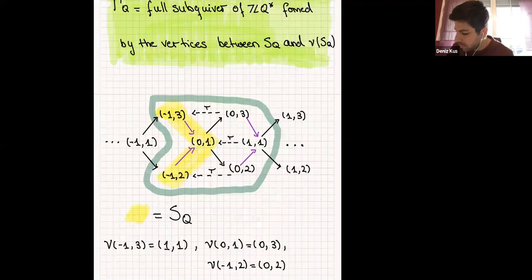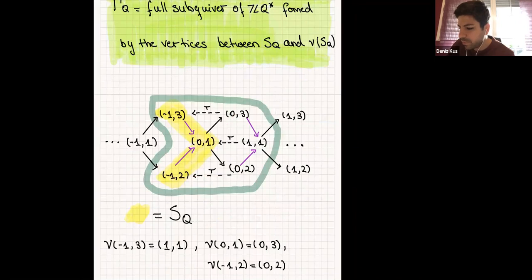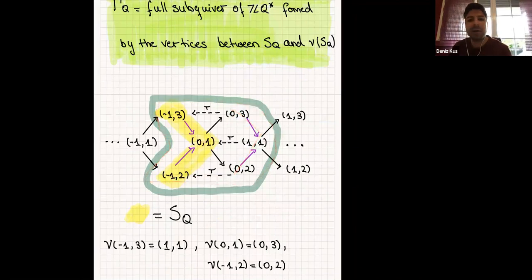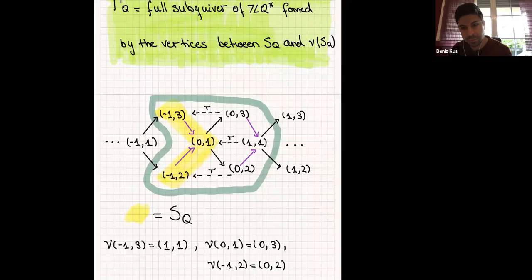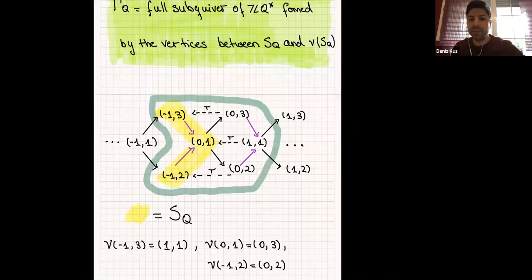This is the Auslander-Reiten quiver. Counting the vertices, we get six — and luckily, the Lie algebra of type A3 has six positive roots. I want to use the combinatorics of this quiver later to describe the crystal structure on the geometric part. Let me take a little break now and come back to this picture at the end. Now I want to talk a little bit about quiver varieties.